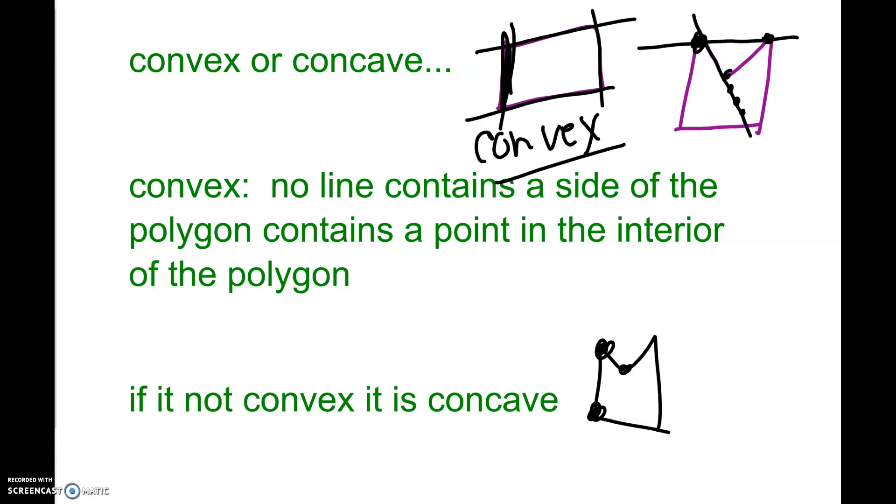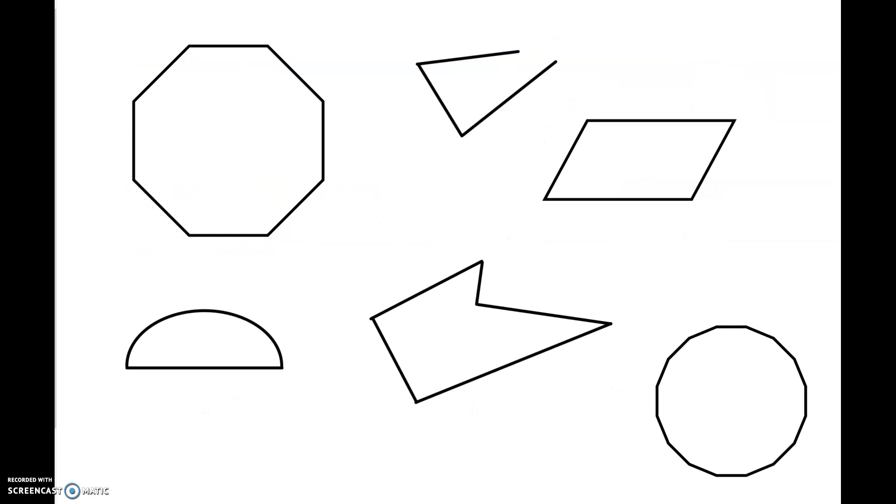Alright. So here's some samples that we have and we're going to go through and we are going to name them. And we're going to say whether they're convex or concave and if they are actually a polygon or not. So this first one right here, is that a polygon? Is it closed, made up of segments, and every point connects here. So we've got one, two, three, four, five, six, seven, eight. So this is an octagon and it is convex. Polygon, octagon, convex.